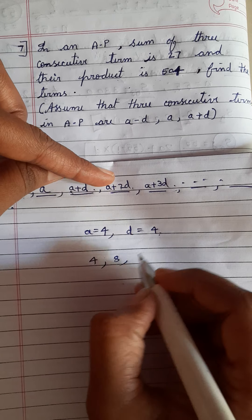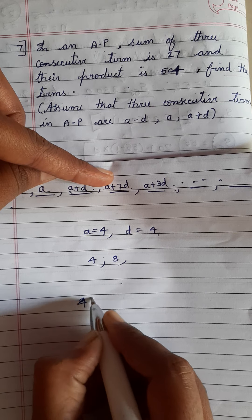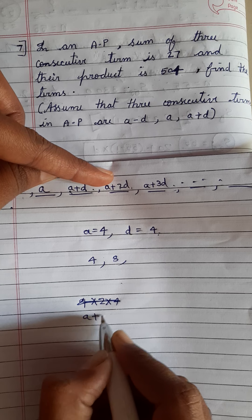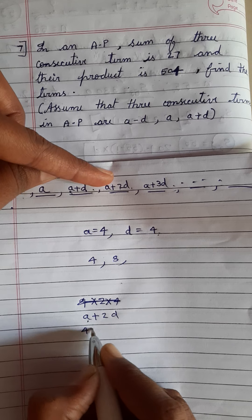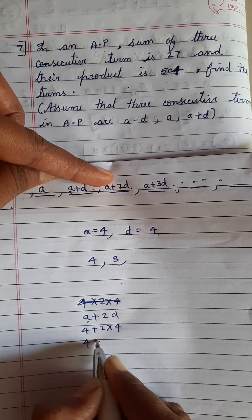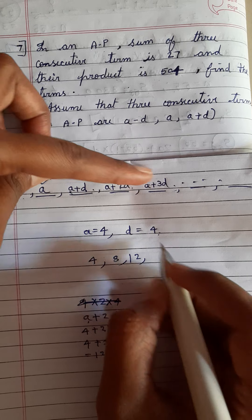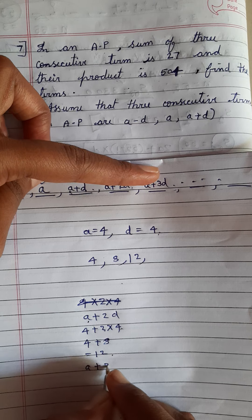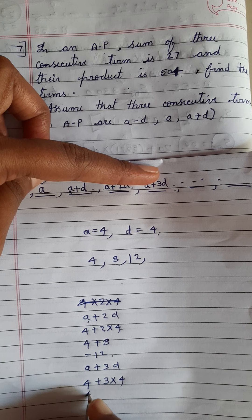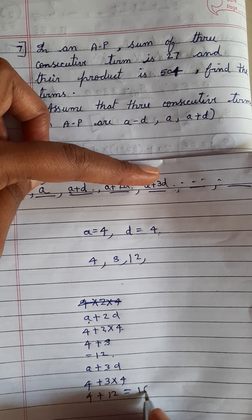a+2d: a is 4 plus 2 times d which is 4, so 4 + 8 = 12. The next term a+3d: 4 plus 3 times 4 = 4+12 = 16.